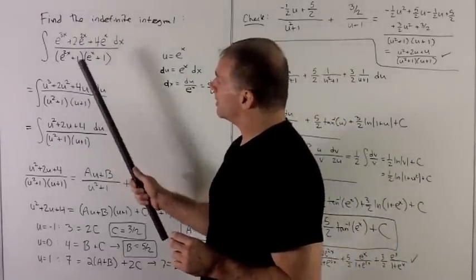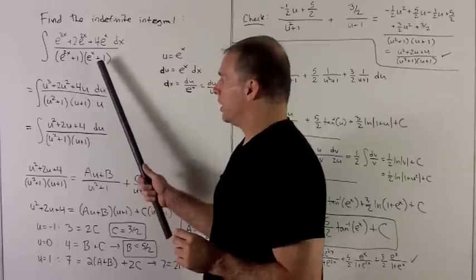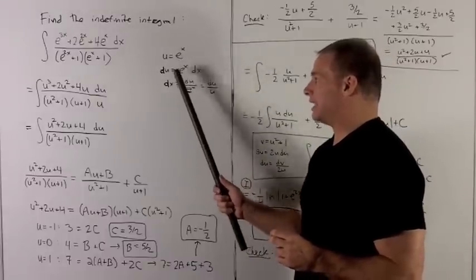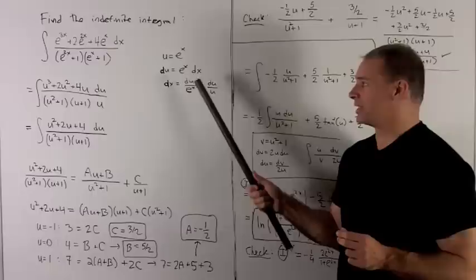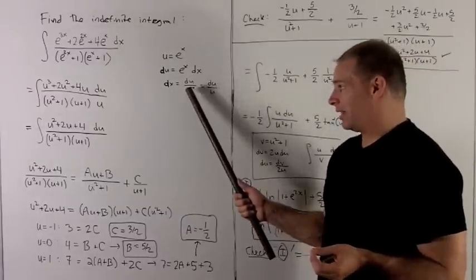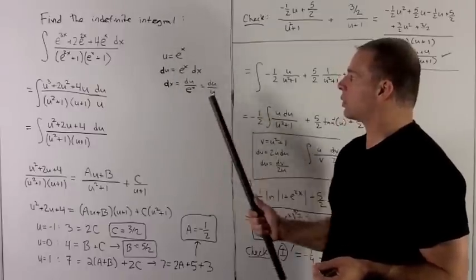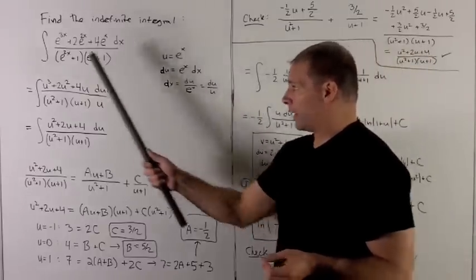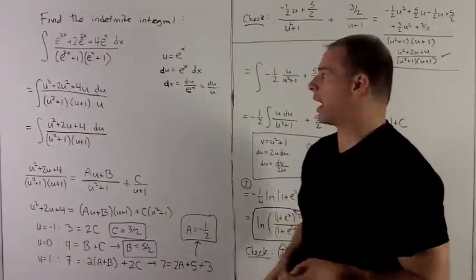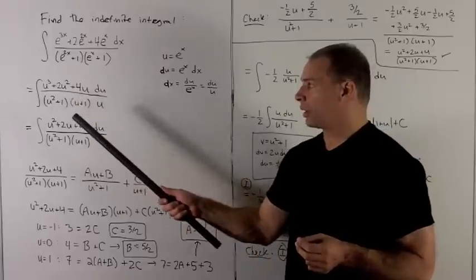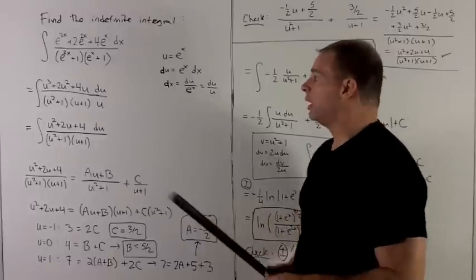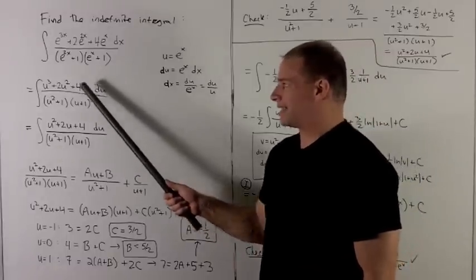Take a look at this. It seems like the smallest unit here is going to be e to the x, so that's what I'll substitute out. Letting u equal e to the x, du is e to the x dx, or dx equals du over e to the x. Since e to the x equals u, when I replace everything with u, we'll have u cubed plus 2u squared plus 4u over u squared plus 1, over u plus 1. Our dx turns into du over u, and you'll notice this u divides nicely into the top.